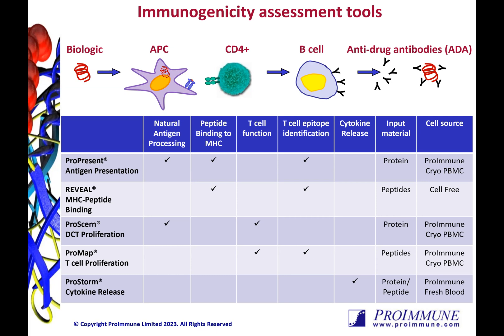The ProPresent, Reveal, ProCern, and ProMap assays are each designed to address key questions and provide information to help make decisions about your program. These tools can be implemented throughout the drug design process, whether you have a handful of variants to compare, a lead candidate to characterize, or even just amino acid sequences generated from your machine learning programs.